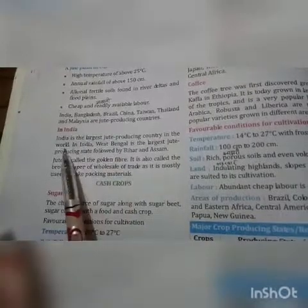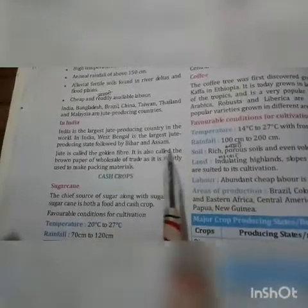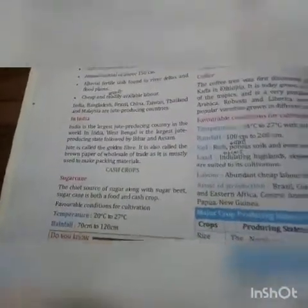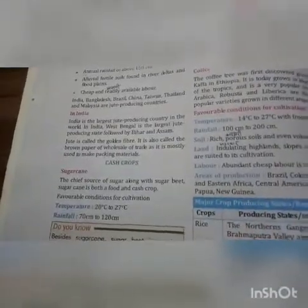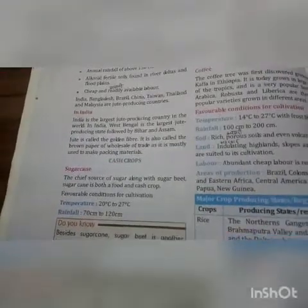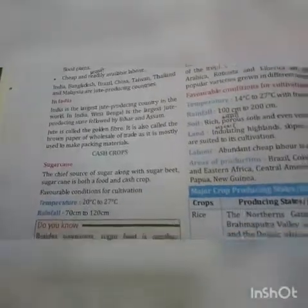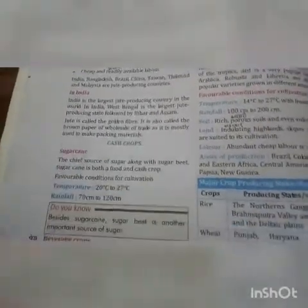India is the largest jute-producing country in the world. In India, West Bengal is the largest jute-producing state, followed by Bihar and Assam. Jute is called the golden fiber. It is also called the brown paper of wholesale trade, as it is mostly used to make packing material.